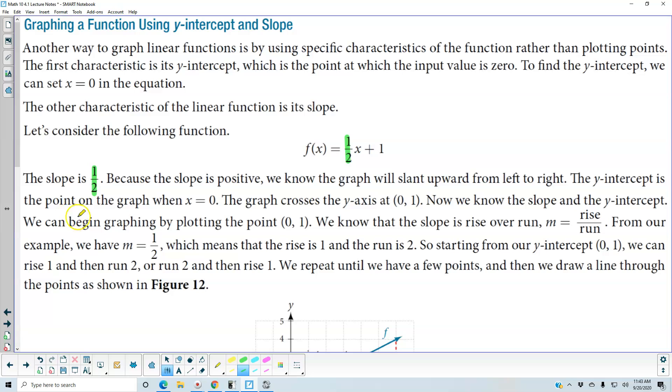The y-intercept is the point on the graph when x is equal to zero. If we plug in zero into the function, we get one-half times zero plus one, which gives us one. Therefore the graph is going to cross the y-axis at zero one.